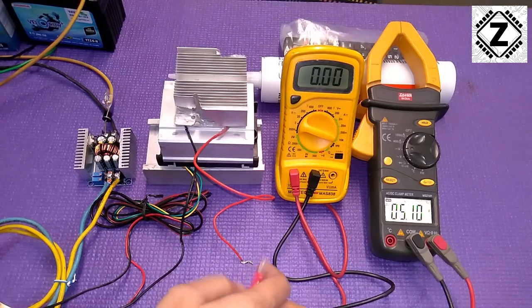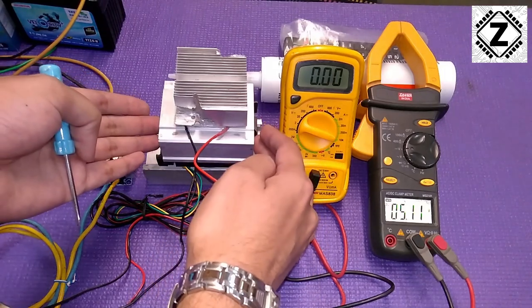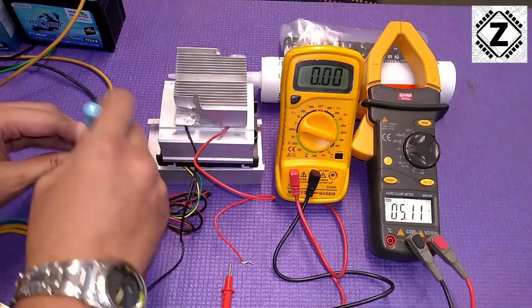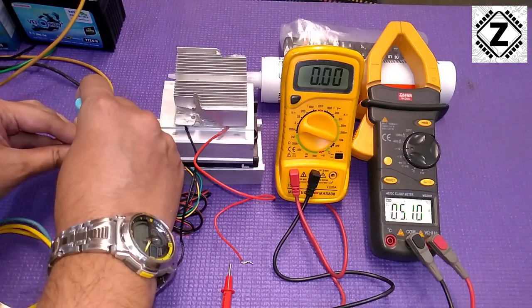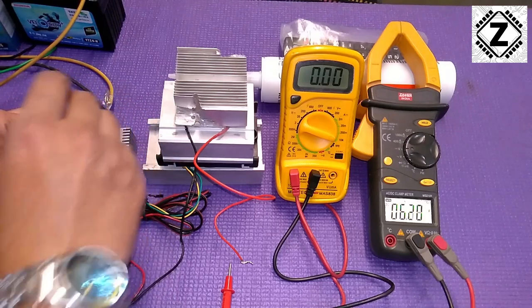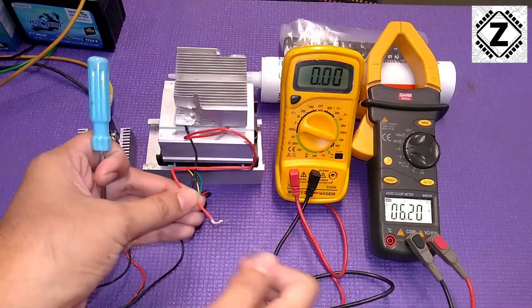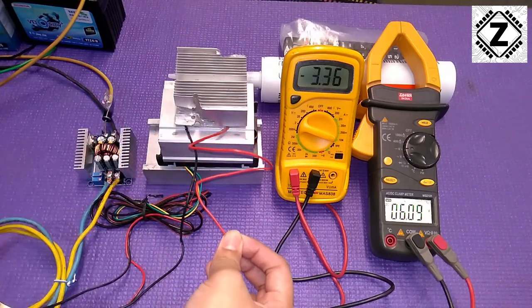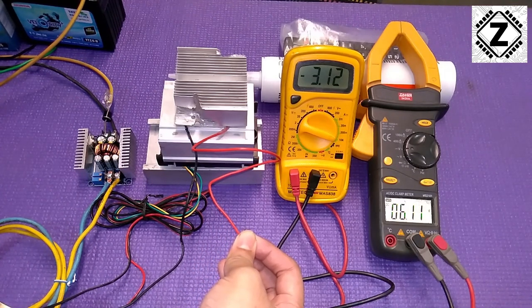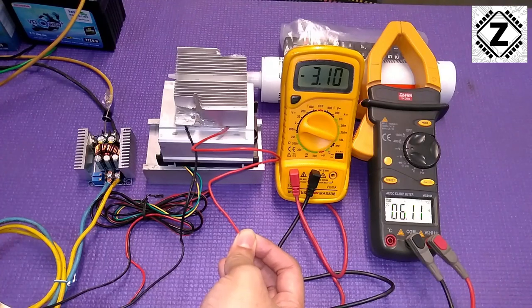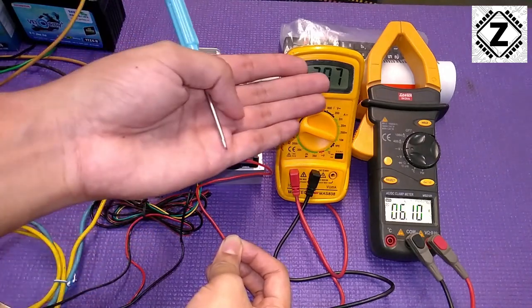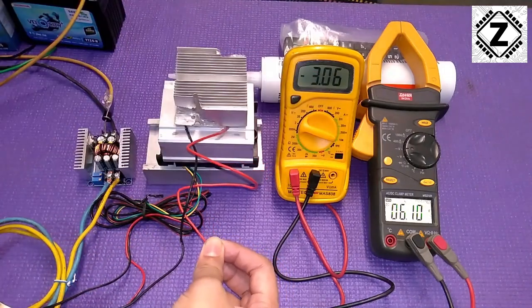I don't want to keep this continuous because the hot side heat sink will get hot and the Peltier's performance will degrade. Let's go to 6 volts. That's 3.3 amps and coming down - stabilizes around 3.1 amps at 6 volts. If you're using a 6 volt battery, this is what you get with a 9 amp Peltier module.